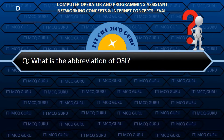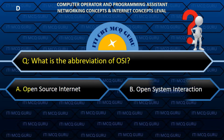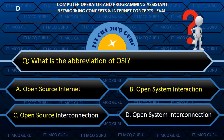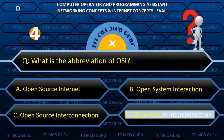What is the abbreviation of OSI? B. Open System Interconnection.